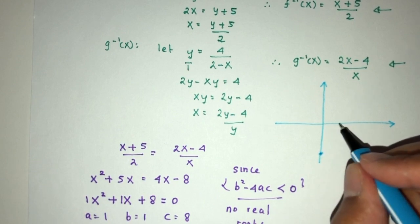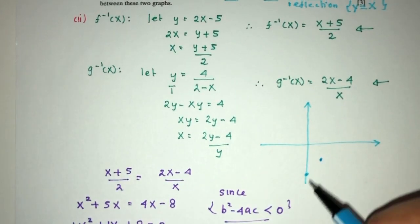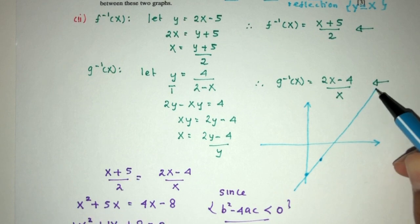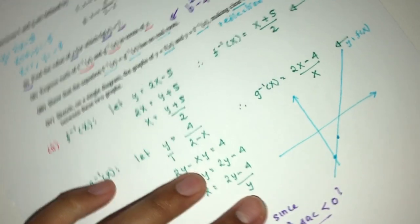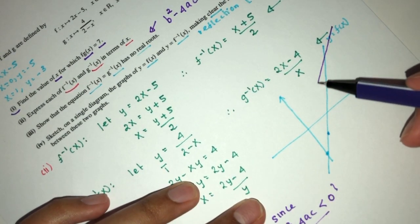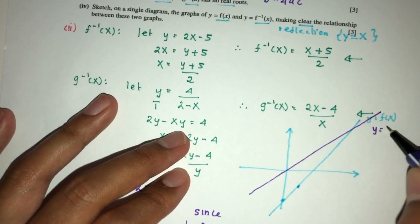Join those two by a straight line going in this direction. That will be y = f(x). Now we show they're connected by a reflection along this line. Label this as y = x.